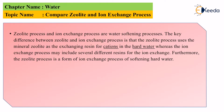If we need to convert hard water into soft water, we need to use a softening process. The key difference between the zeolite and the ion exchange process is that the zeolite process uses the mineral zeolite as an exchanging resin for cations in the hard water, whereas the ion exchange process includes several different resins for ion exchange. Furthermore, the zeolite process is a form of ion exchange process for softening the water.